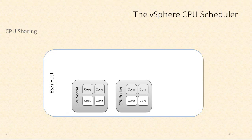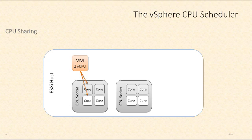Let's take a look at a diagram that will illustrate how the CPU scheduler works. We have multiple virtual machines, and they're all going to be sharing a common set of processors on the ESXi host. For example, we start up a virtual machine with two virtual CPUs, and as that virtual machine is running, it's going to utilize two processor cores on the ESXi host.